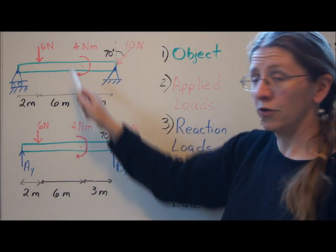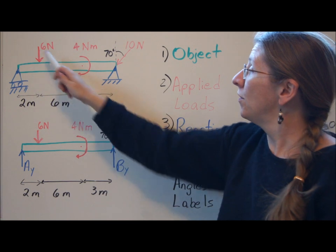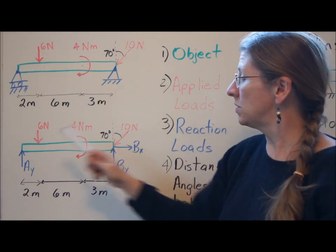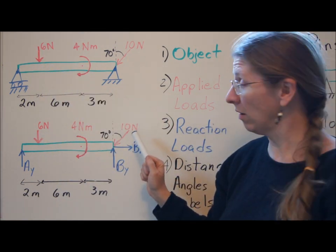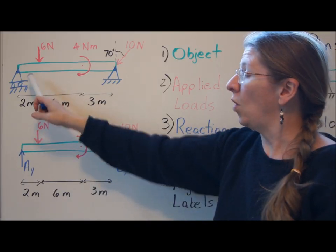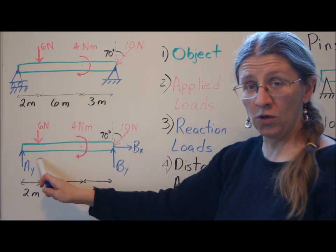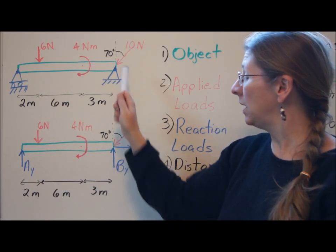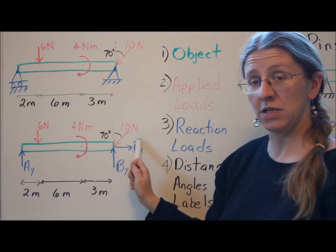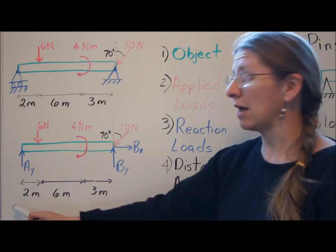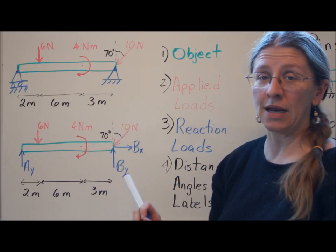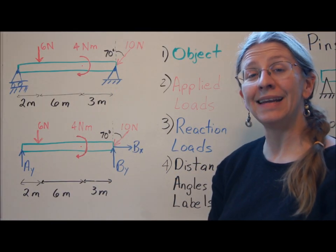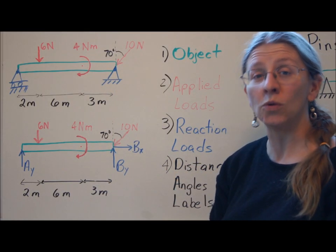So the object comes down, the green piece. The three applied loads come down, as they are. The roller is replaced with a single force. The pin is replaced with two forces here. And then I have to bring down my distances and any angles that I need. Anything I'm going to need to be able to have to do equilibrium.